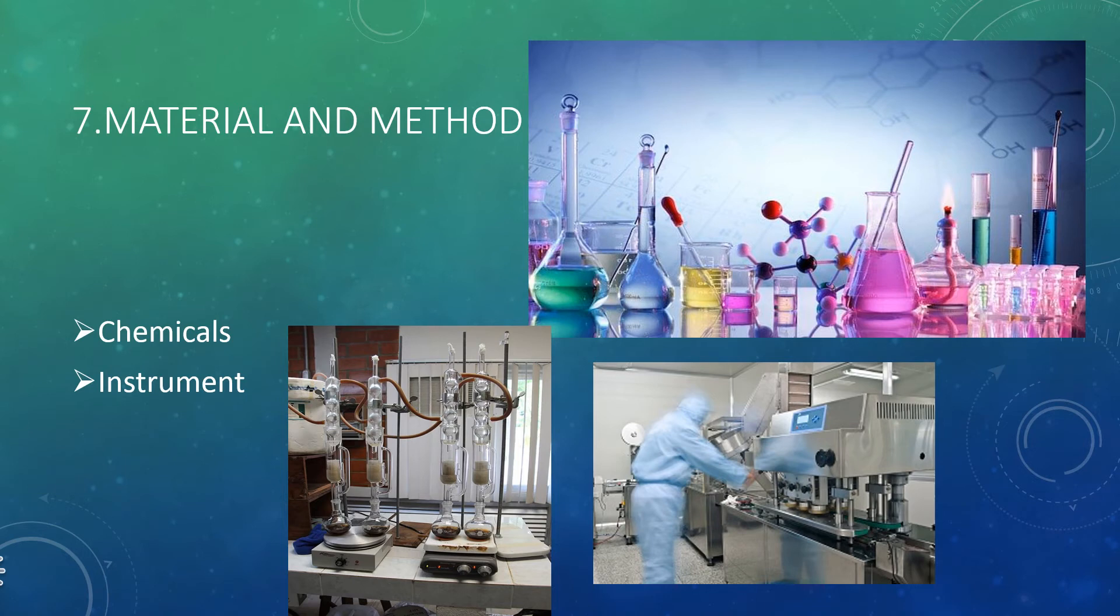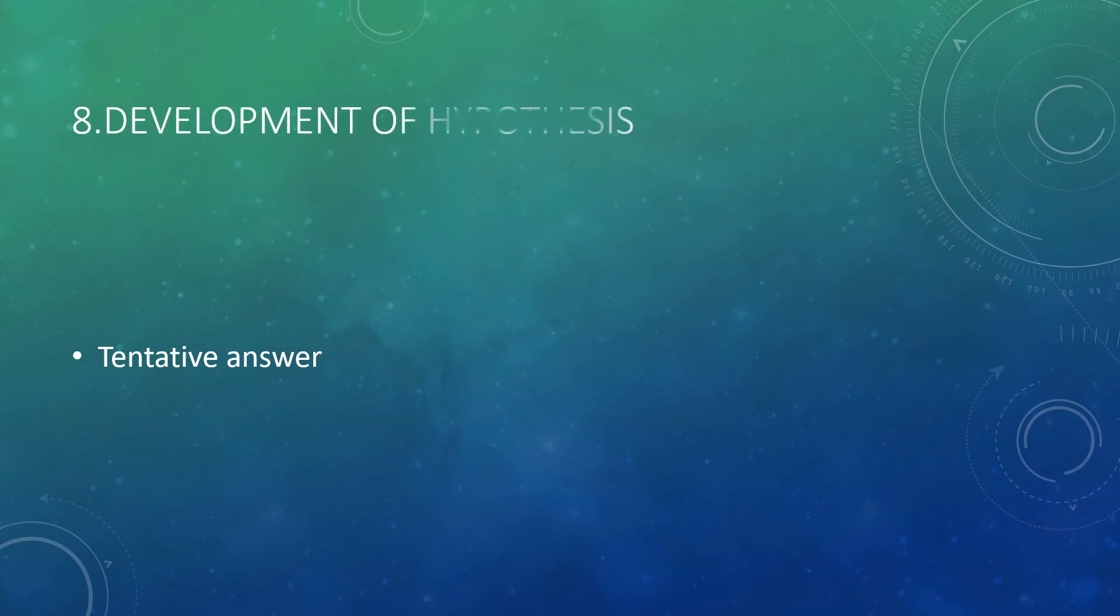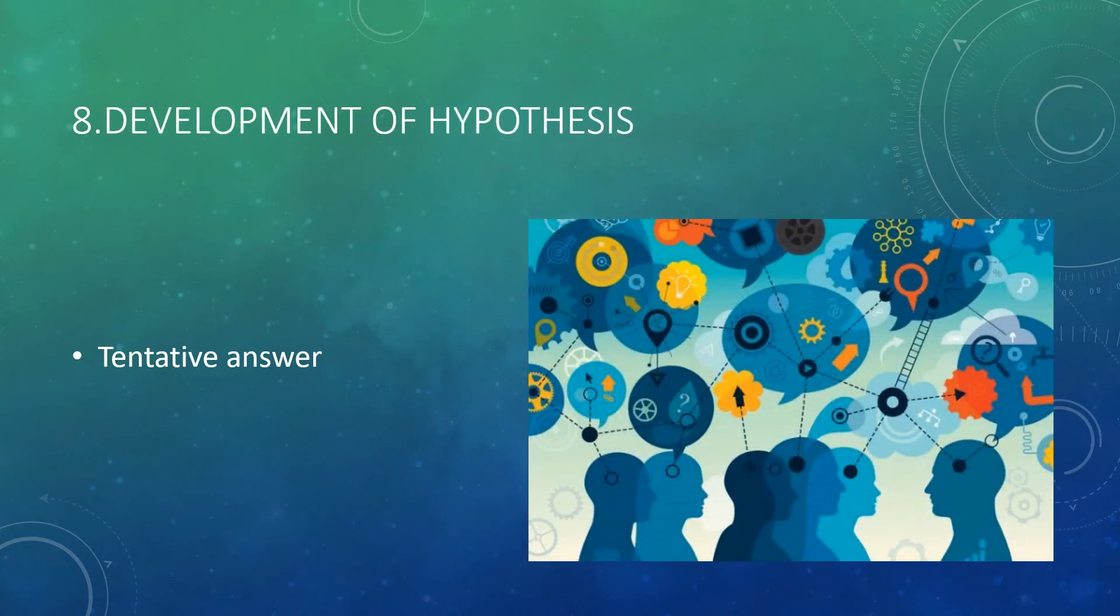Development of hypothesis. It means a tentative answer. For example, if you are doing synthesis, you are expecting a product, but during the synthesis reaction you find something else, that is a derivative. At times you may expect something else and you find another thing. That is called a tentative answer, that is the development of hypothesis. At times you expect something else and you find out something else. The result may be as expected or may not be.